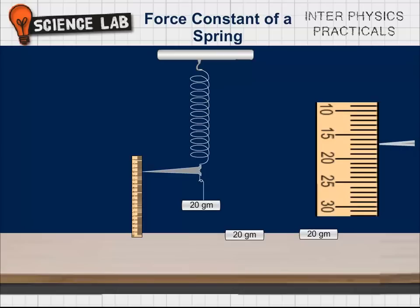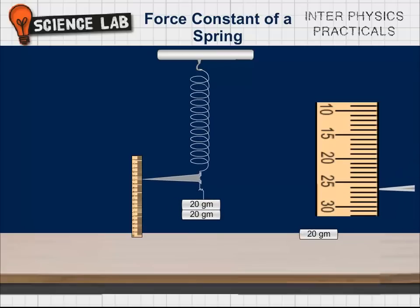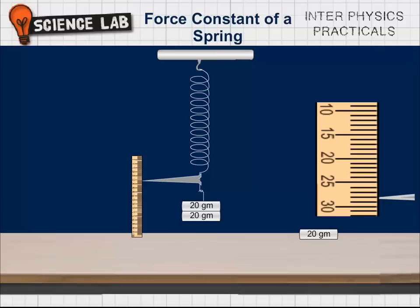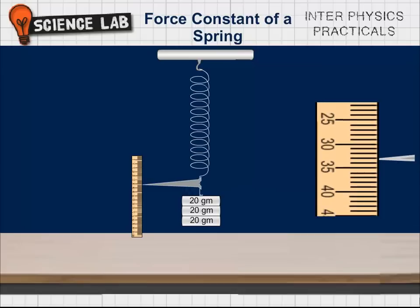5. Gently add a 20 gram slotted weight to the hanger. The pointer tip moves down. 6. Wait for few minutes till the pointer tip comes to rest. Repeat step 4. 7. Repeat steps 5 and 6 till 5 slotted weights have been added.